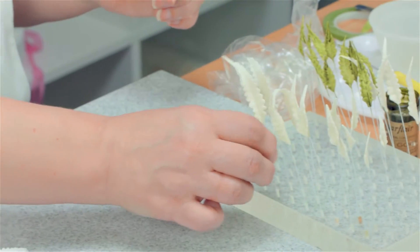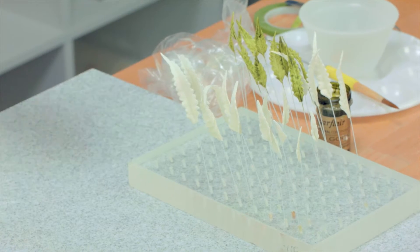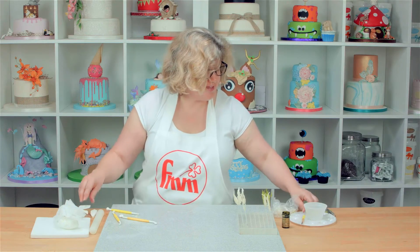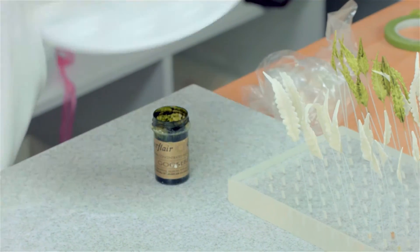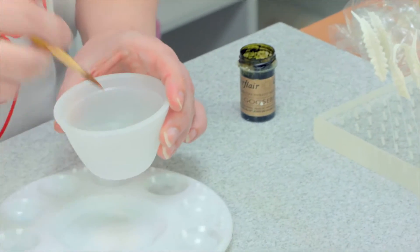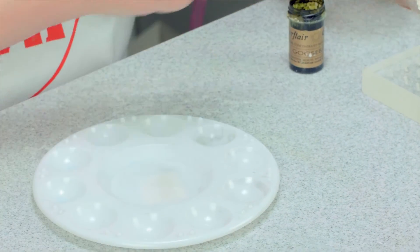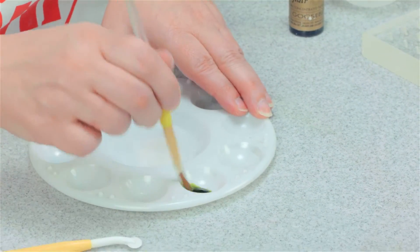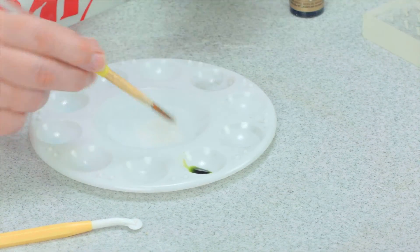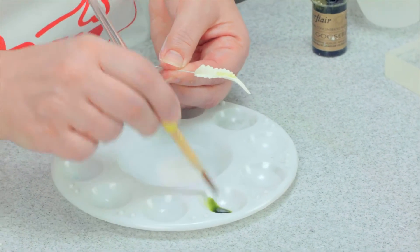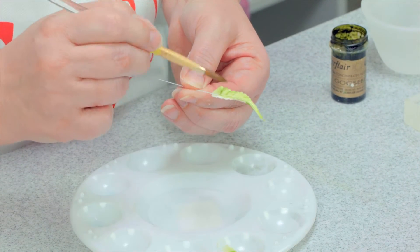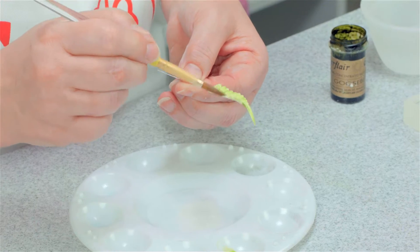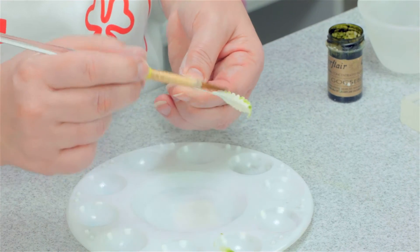When all fronds are made they need to be left to dry completely before they're colored. To color them I'm going to use some gooseberry green paste color which I'm going to mix with some water and then I'm going to brush this over both sides of the leaf. If you do it before they've dried the leaf absorbs too much moisture and they'll fall off the wires, so they do need to be completely dry.